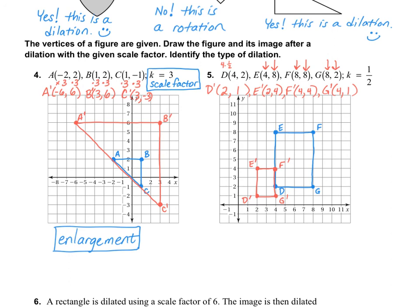Our last step to number 5 is to say what type of dilation it is. Since it got smaller, this time it is called a reduction. Okay, that's it for today. We're going to skip number 6 at the bottom. Thanks for watchin'.